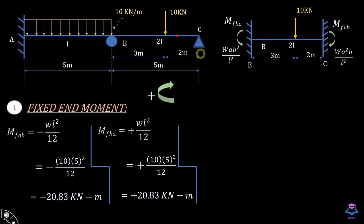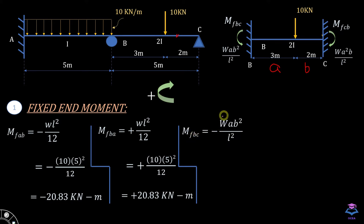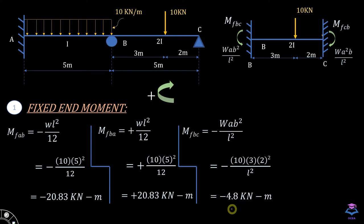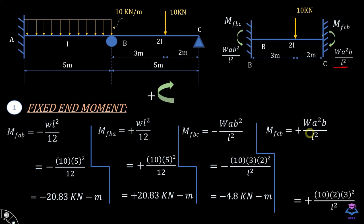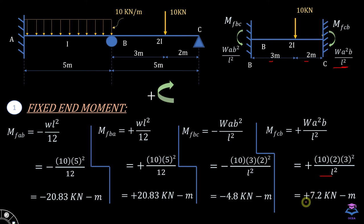Now we consider the second member as a fixed-end member. MFBC is equal to WAB²/L², where A equals 3 (distance from left support to point load) and B equals 2 (distance from right support to point load), giving MFBC equal to minus 4.8 kN·m. MFCB can be calculated using the formula WA²B/L², noting that in MFBC the B term is squared, while in MFCB the A term is squared. MFCB comes out to be 7.2 kN·m.